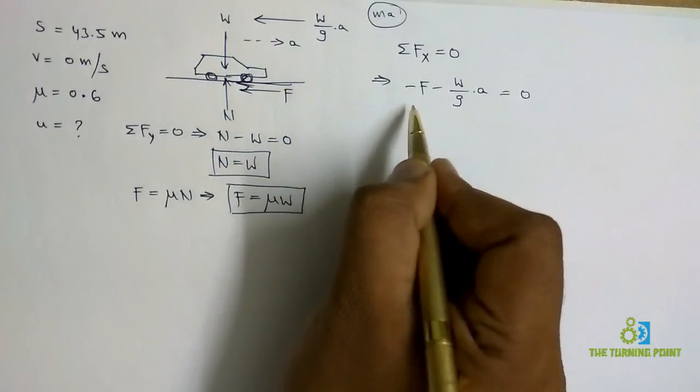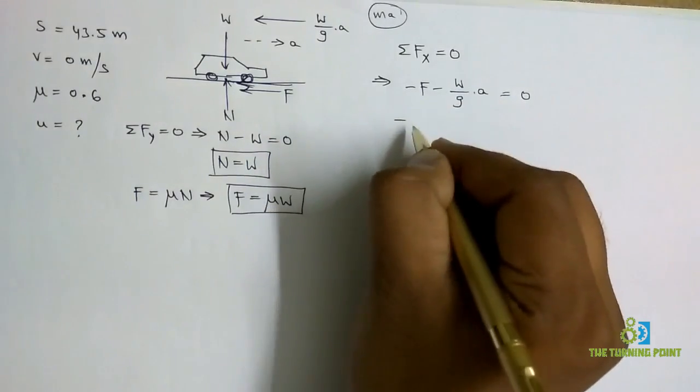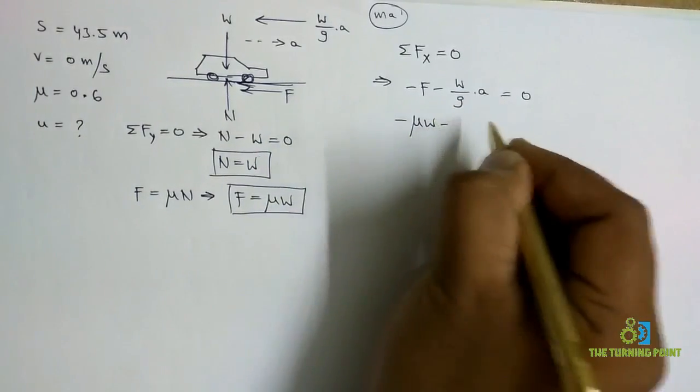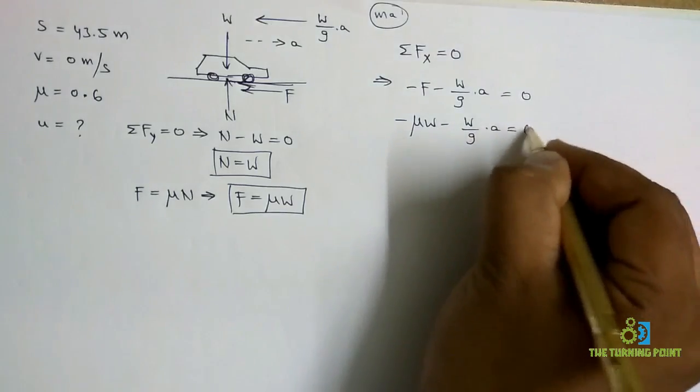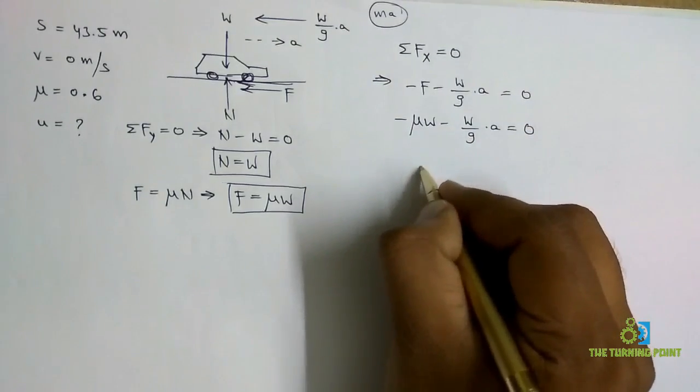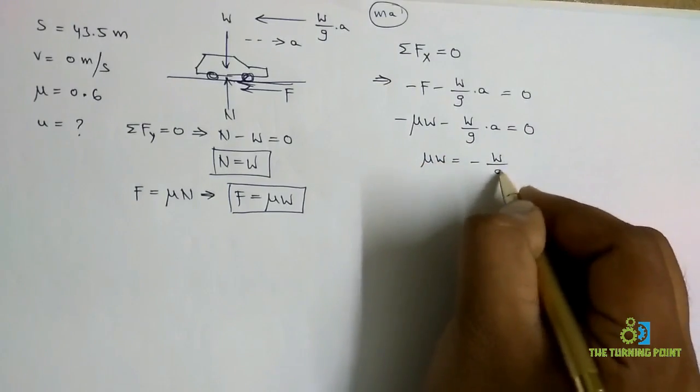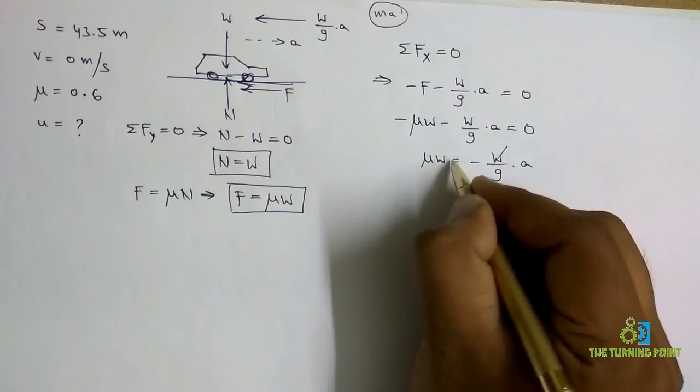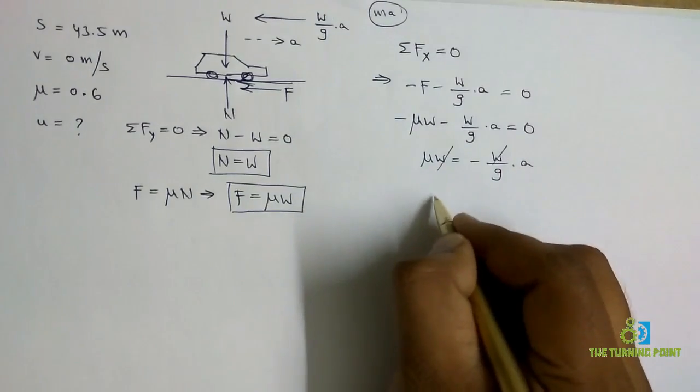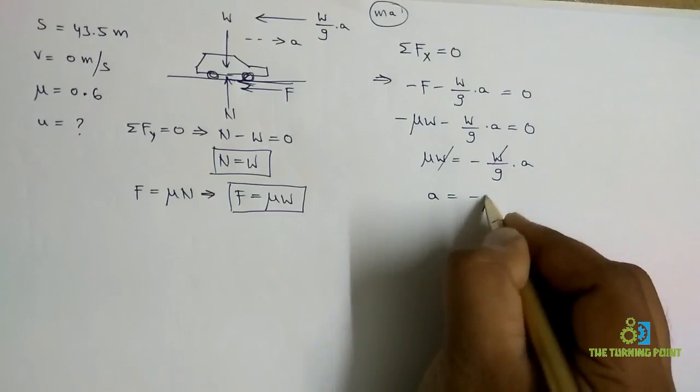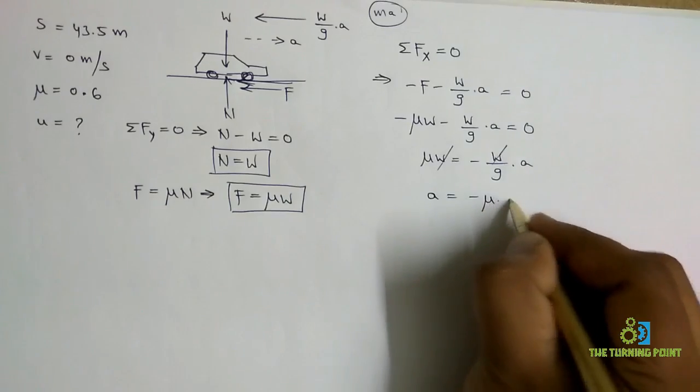I got the value of F as μW, so -μW - W/G into A = 0. From that μW = -W/G into A. W gets cancelled. What I want is acceleration, so acceleration is equal to -μG.